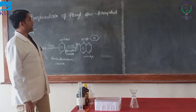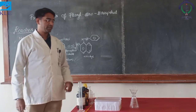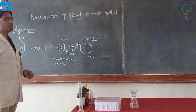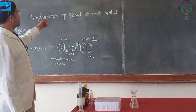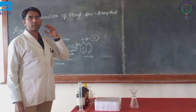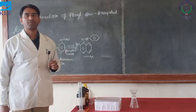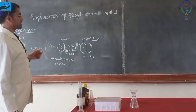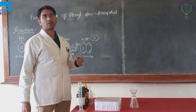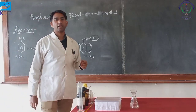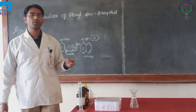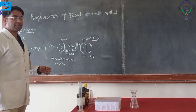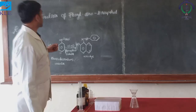Hello everyone, today we will be doing the demonstration of preparation of phenyl azo 2-naphthol compound. Let us know a little bit about the phenyl azo 2-naphthol compound. It is a dye, basically used in different processes like coloring of textiles and other things, and it is also used as a dyeing agent in some medicinal compounds.